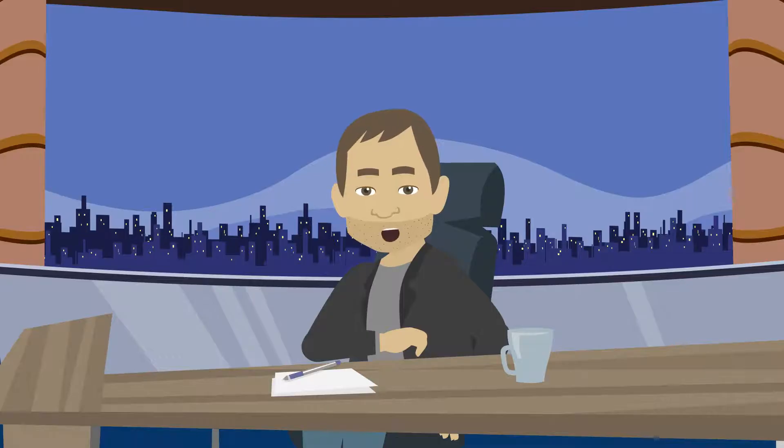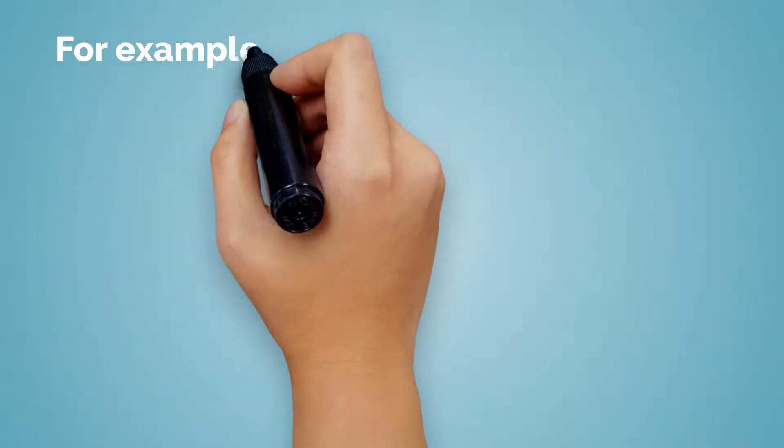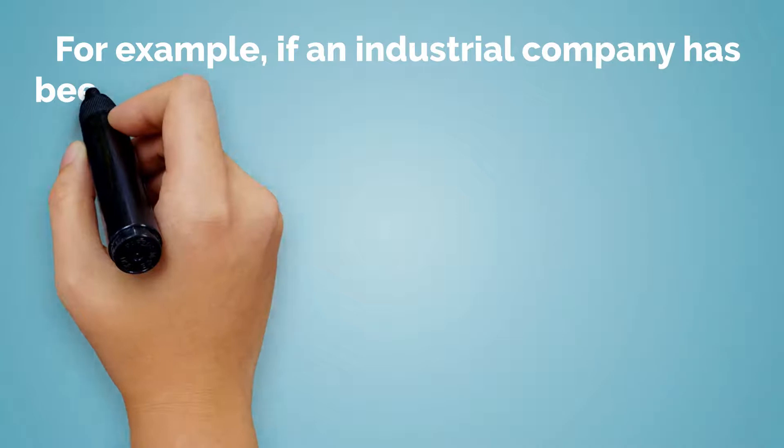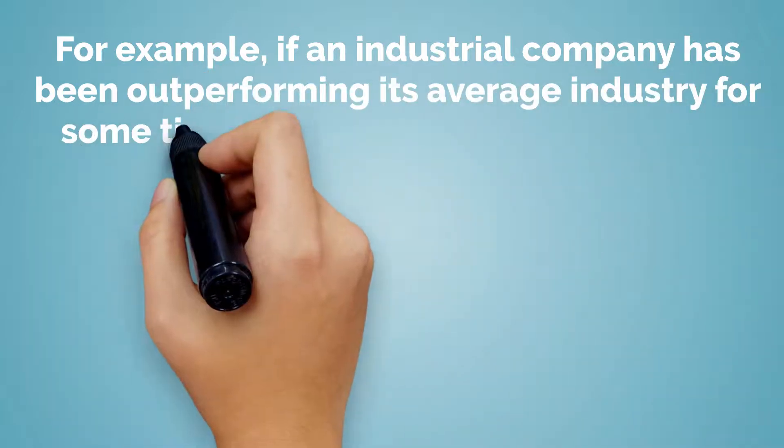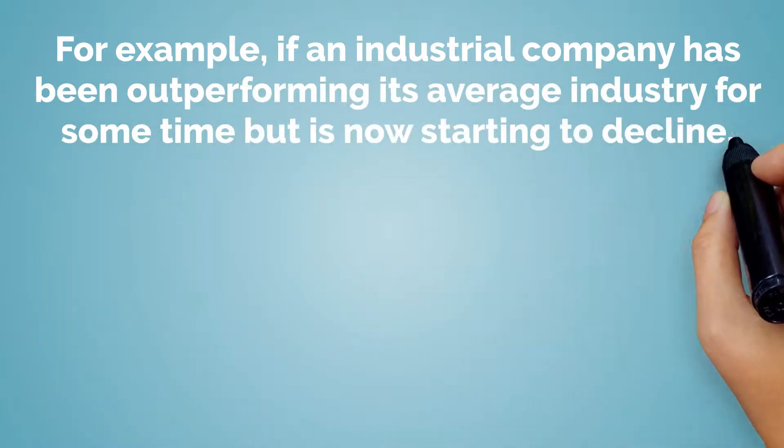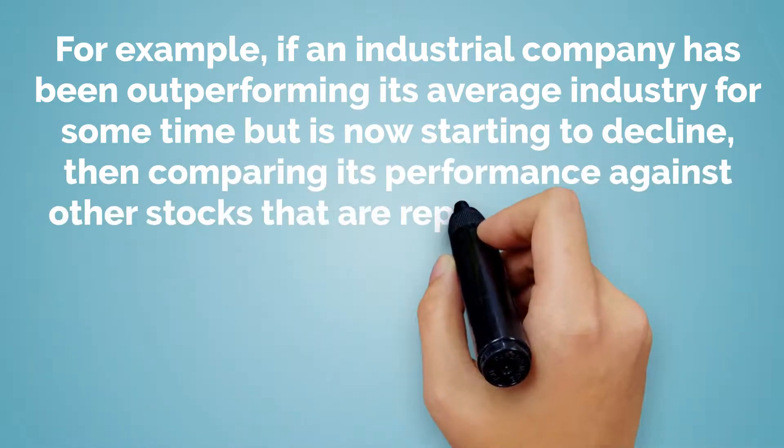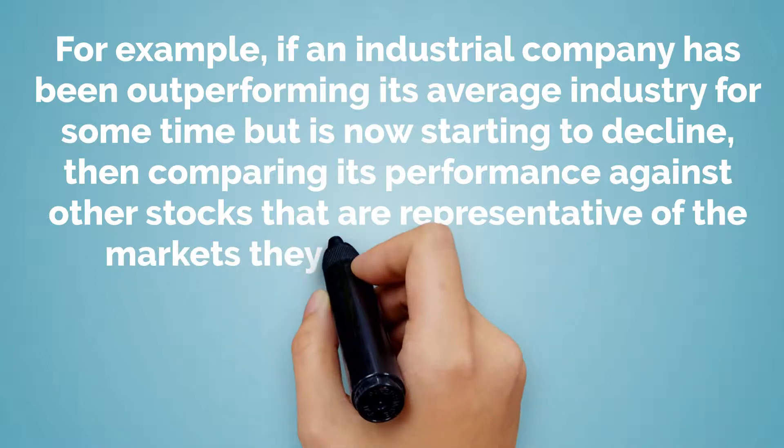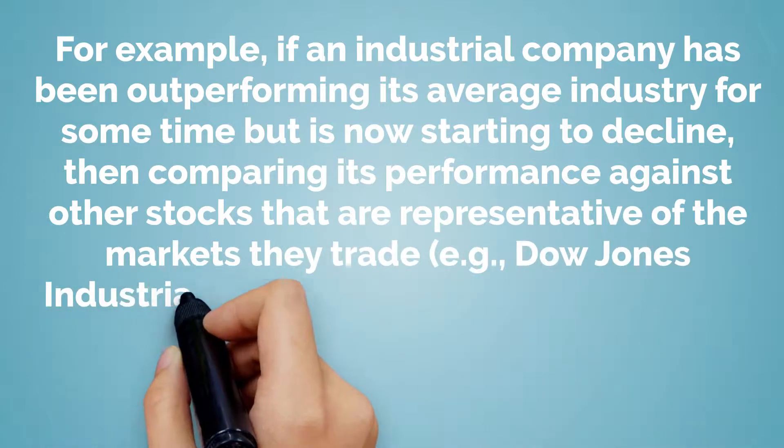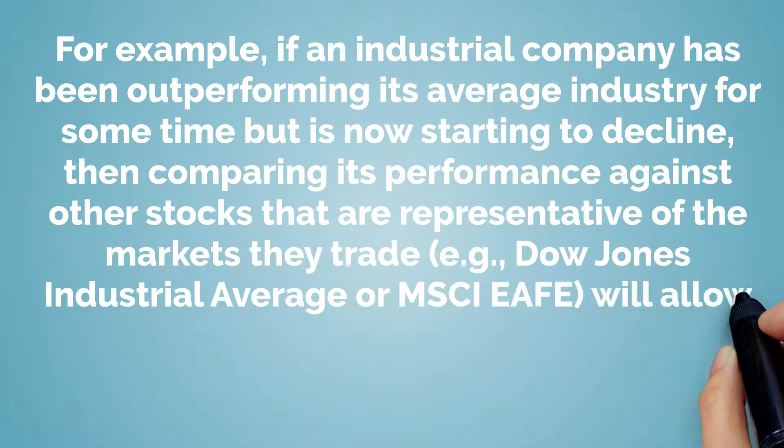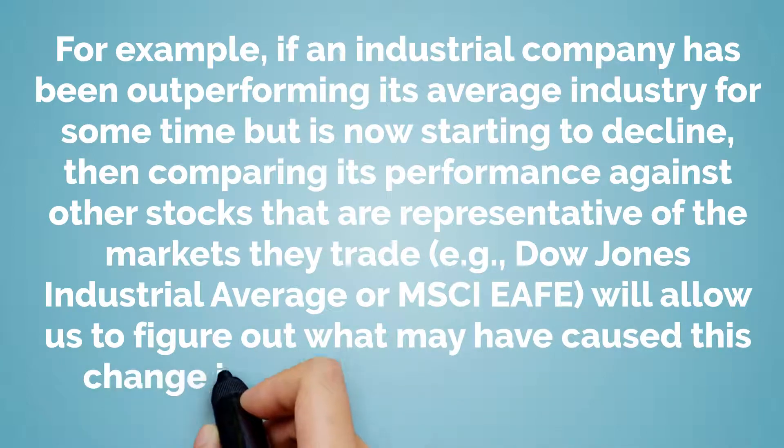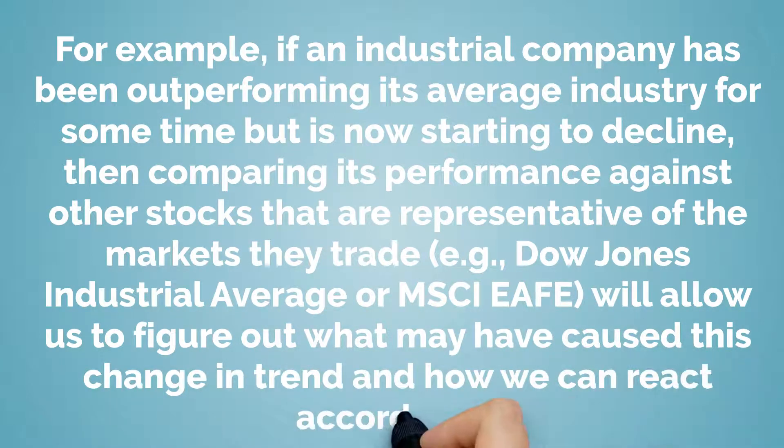When you're deciding on a beta, it is important to be aware of the market in which your stock trades. For example, if an industrial company has been outperforming its average industry for some time but it is now starting to decline, then comparing its performance against other stocks that are representative of the markets they trade, for example, the Dow Jones Industrial Average or the MSCI EAFE, will allow us to figure out what may have caused this change in trend and how we can react accordingly.